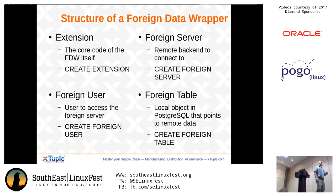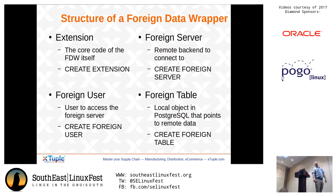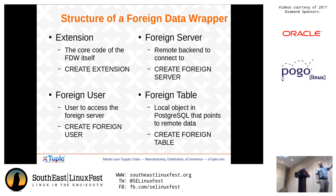From the extension itself, we have the core code. The command to create it is CREATE EXTENSION followed by the extension name. The other parts are the foreign server, the foreign user mapping, and the foreign table. Each of these three parts have their own CREATE statements: CREATE FOREIGN SERVER, CREATE USER MAPPING, and CREATE FOREIGN TABLE.